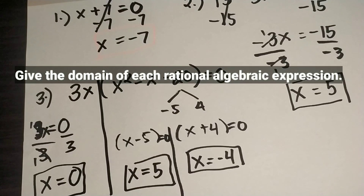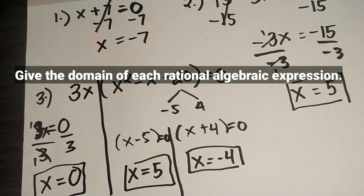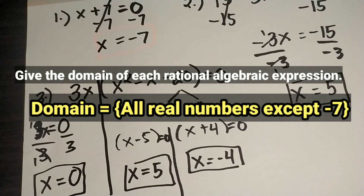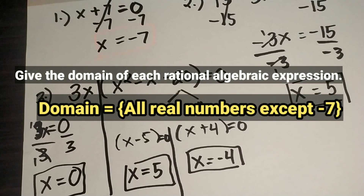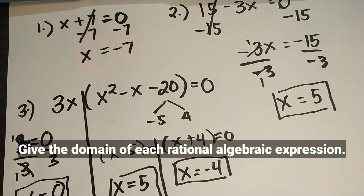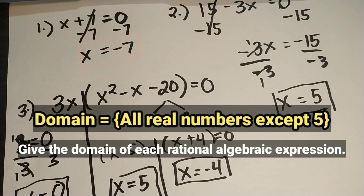Now for finding the domain. For Number 1, if x plus 7 is the denominator, the domain is equal to all real numbers except negative 7. For Number 2, if 15 minus 3x is the denominator, the domain is equal to all real numbers except positive 5.